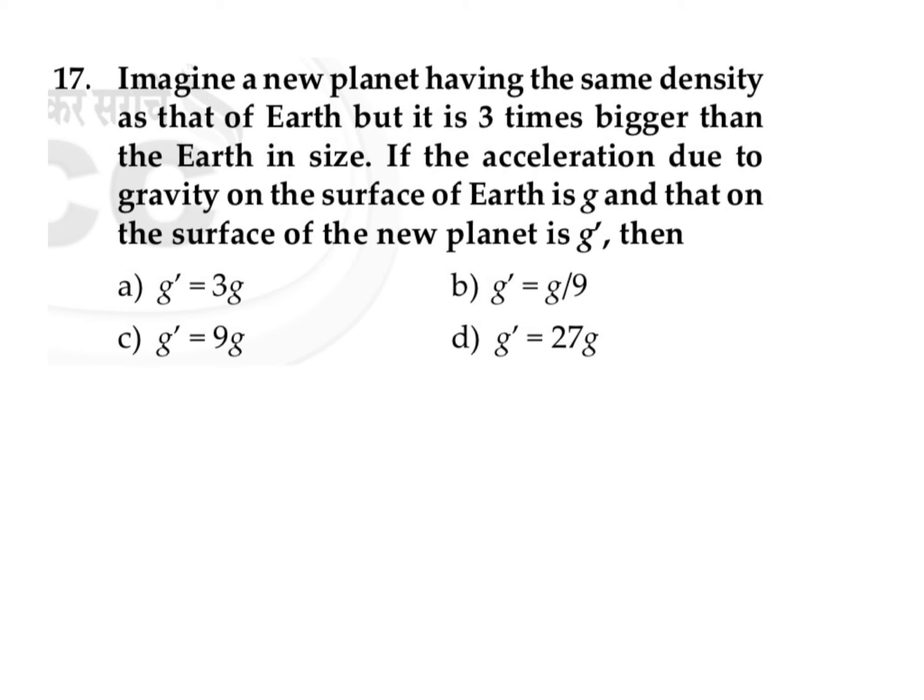First we need to observe what are the given parameters: same density as that of Earth, so one parameter is density, and three times bigger than the Earth size, meaning the other parameter is the radius. So we need to write the relation between acceleration due to gravity and density and the radius.